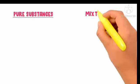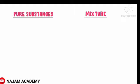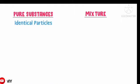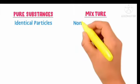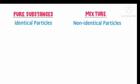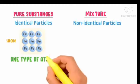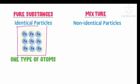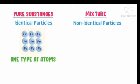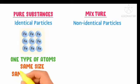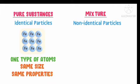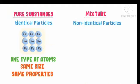Every pure substance is made up of same type of particles — that is called identical particles. Mixtures have non-identical particles. Identical particles means same type of elements in combination. That is one type of atoms, same size, same mass, and same volume. That is called pure substances. Pure substances have chemical combining capacity.